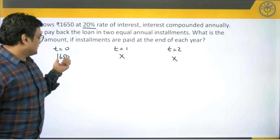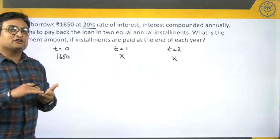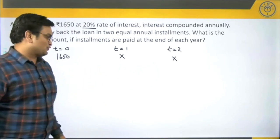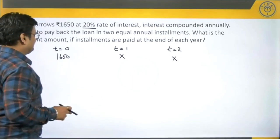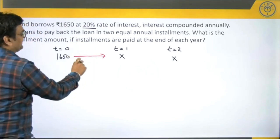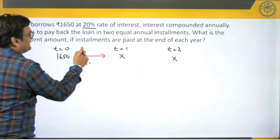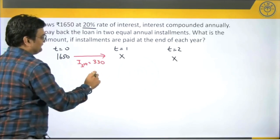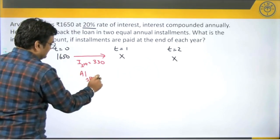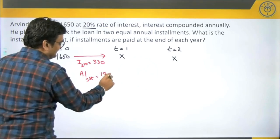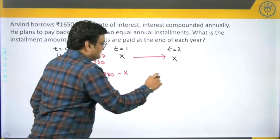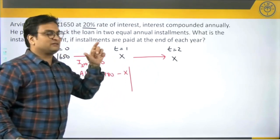Clearing the loan means paying back whatever principal was taken along with any interest accumulated over two years. For the first year, the rate of interest is 20 percent. Interest for the first year is 20 percent of 1,650, which is 330 rupees. So the amount at the end of the first year is 1,650 + 330 = 1,980, out of which we are paying back x. That means for the next year the principal amount will be 1,980 − x, not 1,650.